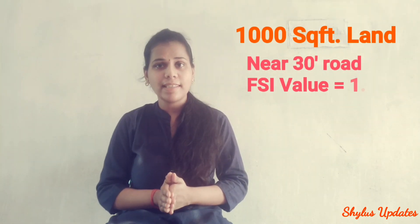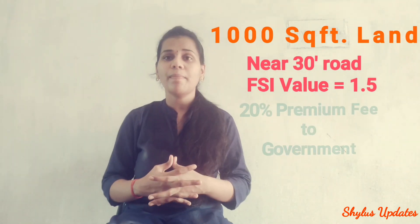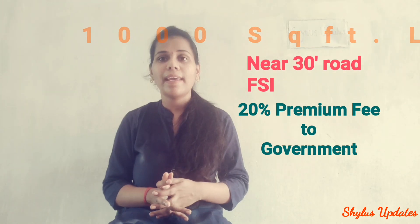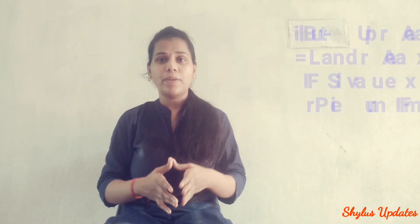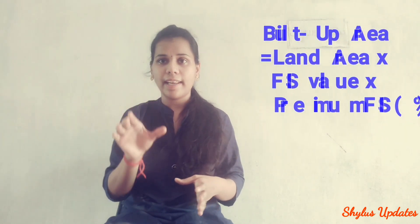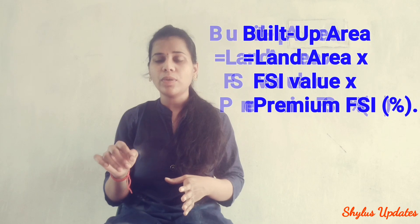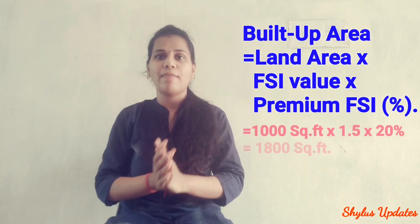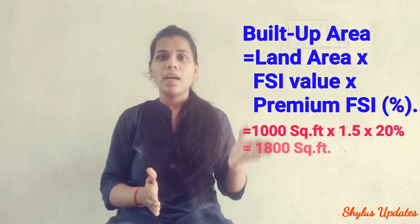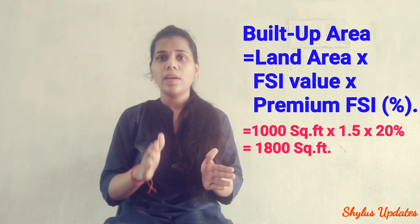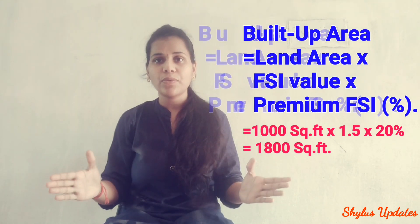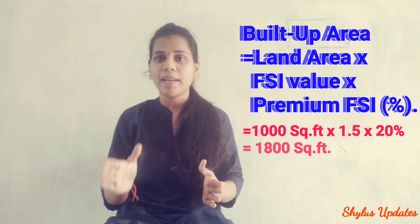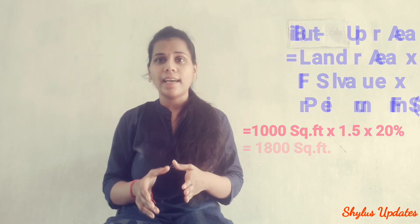For example, if you have a land of about 1000 square feet located near a road width of about 30 feet, where the normal FSI is 1.5, then you can avail premium FSI of 20% by paying the premium fee. How to calculate the built-up area for 1000 square feet? Built-up area equals plot area (1000 sq ft) multiplied by normal FSI value (1.5) multiplied by the premium FSI percentage (1.20 for 20%). When you solve this, you get the answer as 1800 square feet.